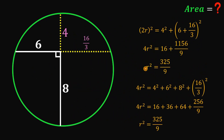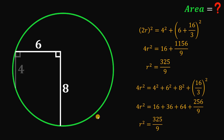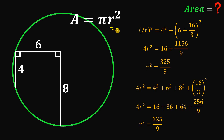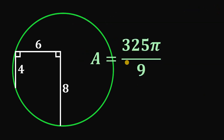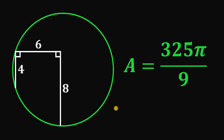Now that we know r², we can find the area. The area of the circle equals π r². Since r² is 325 over 9, the area equals 325π over 9 square units. That is the answer — given this figure, the area of the circle is 325π/9 square units.